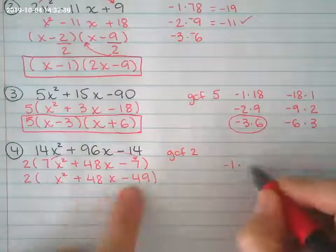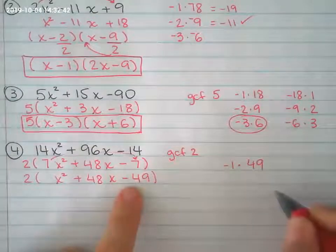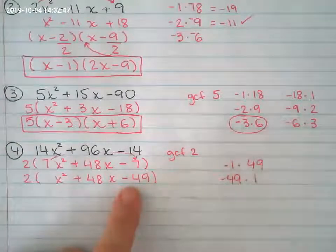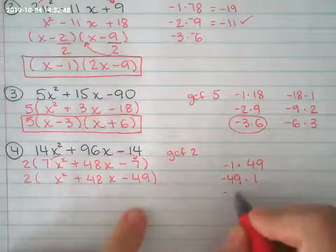Negative 1 and 49. And I can do negative 49 and 1. And I know also 7 works too. Positive 7 times negative 7.